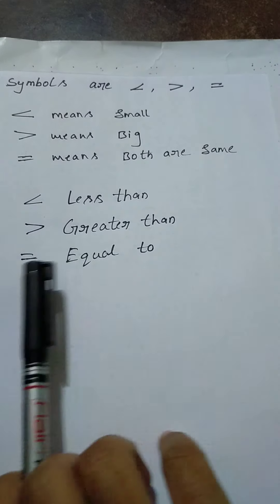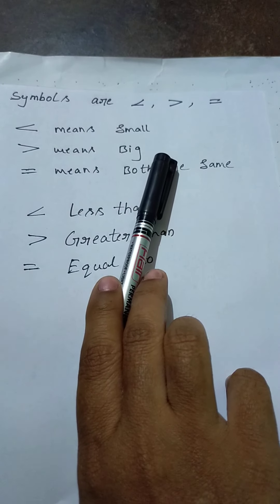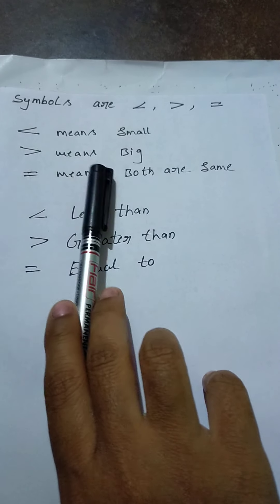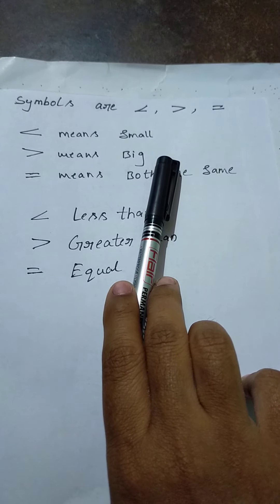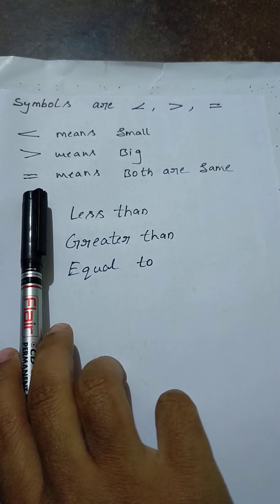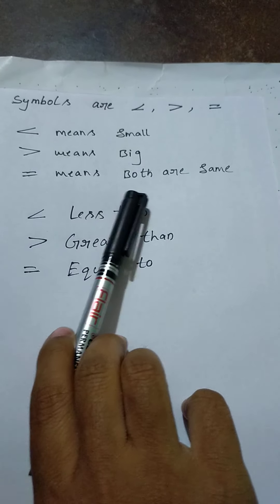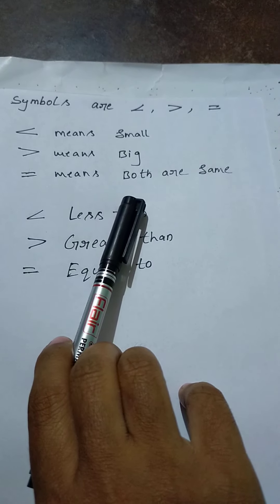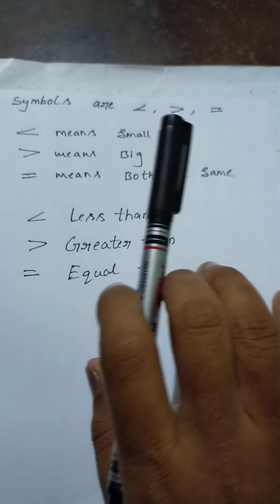Once again: this symbol is called less than, this symbol is called greater than, this symbol is called equal to. Less than means small — it indicates the smallest numbers. Greater than means big — it indicates the biggest numbers.